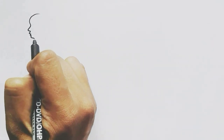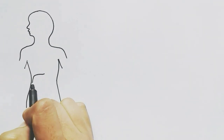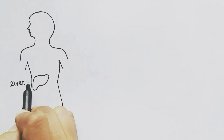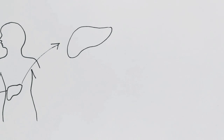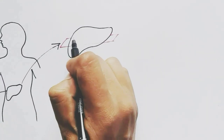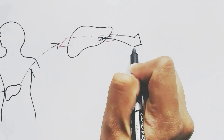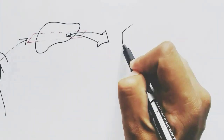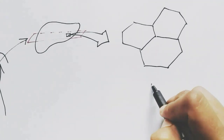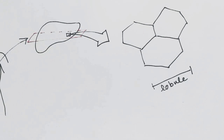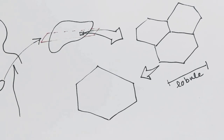Today we will talk about the histology of the liver in the human body. If we take the liver, cut a section, we will see some hexagonal lobes in the liver. Each hexagon of the liver is called a lobule.